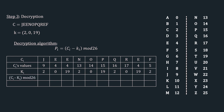Applying Ci - Ki mod 26: 9-2=7, mod 26 is 7; 4-0=4; 4-19=-15, mod 26 is 11; 13-2=11, mod 26 is 11; 14-0=14; 15-19=-4, mod 26 is 22; 16-2=14; 17-0=17; 4-19=-15, mod 26 is 11; and 5-2=3, mod 26 is 3.